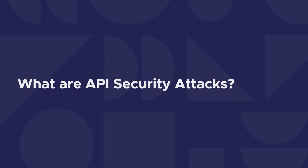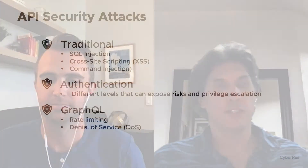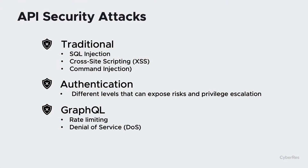Well, API security is really just a subset of application security in general for web apps. You have your traditional attacks that you have to be worried about, things like injection attacks, where you have cross-site scripting, SQL injection, command injection. All of those still apply in APIs. But then you have some additional concerns that are really more specific to APIs.